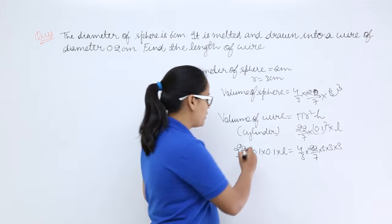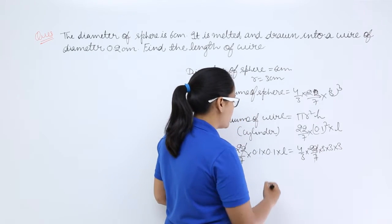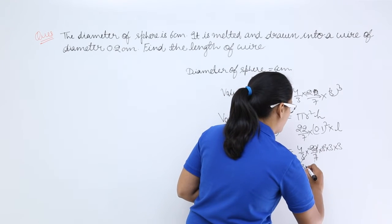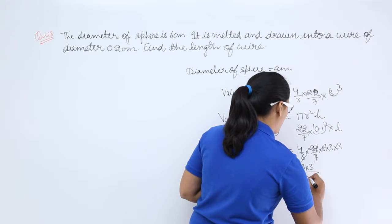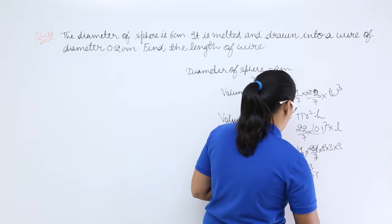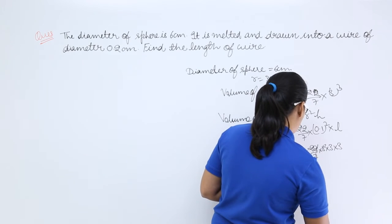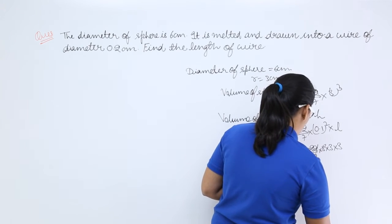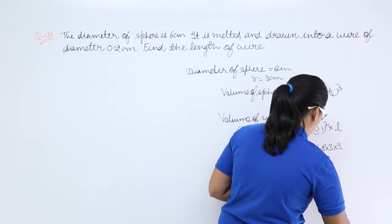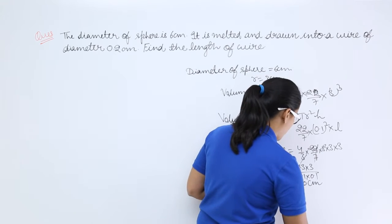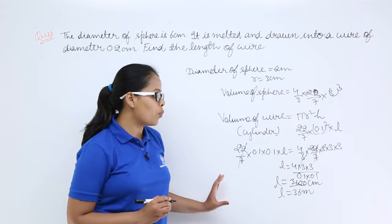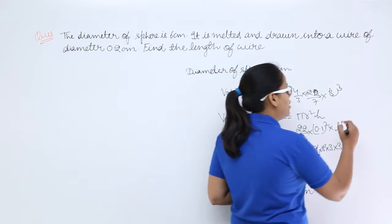What will be the value of L? Let's cancel out 22/7, 22/7, and you can write this as 4 × 3 × 3 divided by 0.1 × 0.1. This will be 36 divided by 0.01, so this length will be 3600 centimeters. When you need to calculate this length in meters, you can write this as 36 meters because 1 centimeter is 1/100 meter.